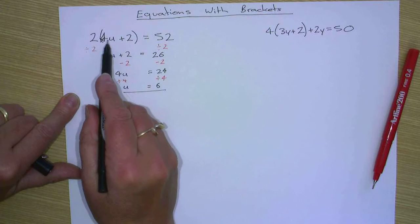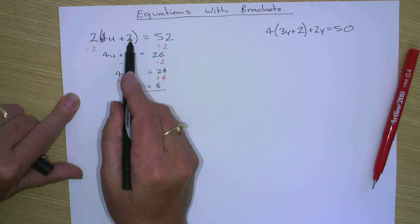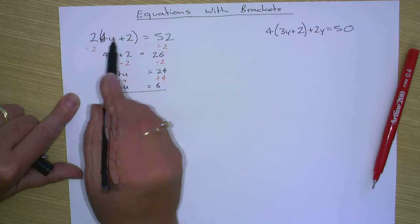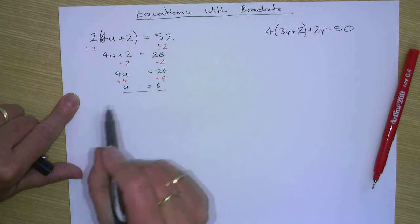Do the brackets first. Four times six is 24 plus two is 26 times two is 52. So that's correct.